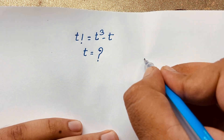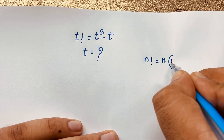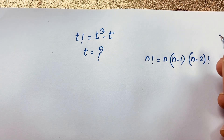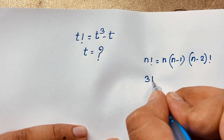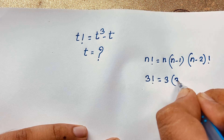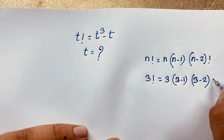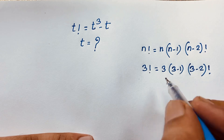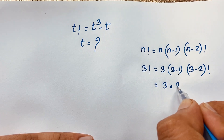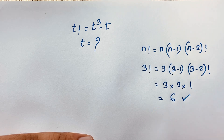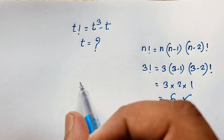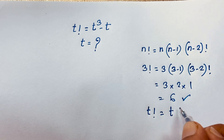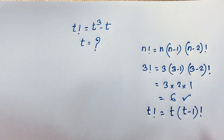Under that, n factorial will be n times (n-1) times (n-2) factorial. So if you think here is 3 factorial: 3 times (3-1) times (3-2) times (3-3) factorial. You know that 0 factorial equals 1. So it will be 3 times 2 times 1, which equals 6. So 3 factorial is 6. But here t factorial — so t factorial equals t times (t-1) factorial.